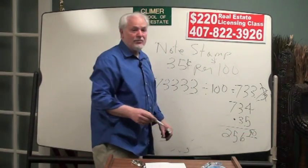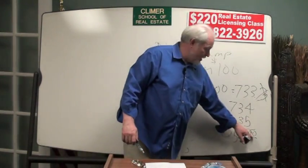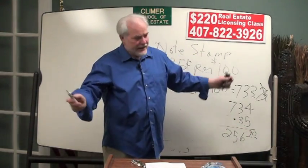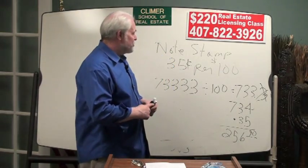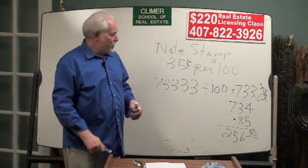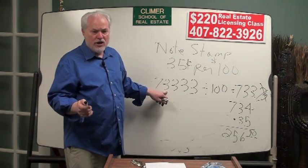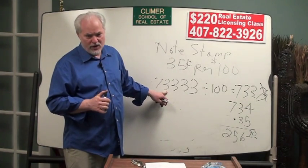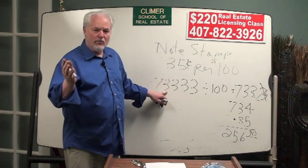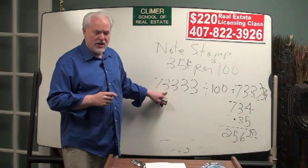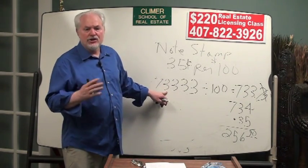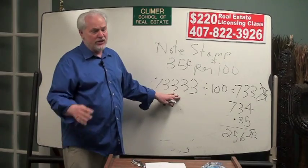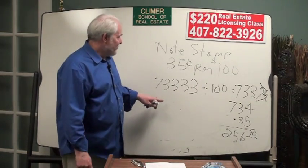Now, doc stamps on the note will always end in 0 or 5. If they don't end in 0 or 5, you got the wrong answer. They always end in 0 or 5. Doc stamps on the note are on the brand-new mortgage, they're on an assumed mortgage, but they are not on a subject-to mortgage. So they're on new mortgages, they're on assumed mortgages, but they're not on subject-to mortgages. If you've forgotten what that is, go back to your book. Just know it doesn't get the stamps.